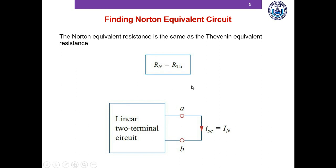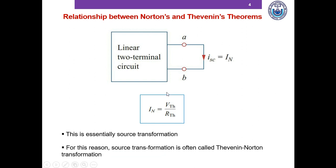The Norton resistance is exactly equal to the Thevenin resistance. To compute the Norton current, we do a short circuit and determine the short circuit current. So if a linear two-terminal circuit has Thevenin voltage VTH and Thevenin resistance RTH, then Norton resistance RN equals RTH, and Norton current IN equals VTH divided by RTH — basically taking the source transformation of the voltage source. For this reason, source transformation is often called Thevenin-Norton transformation.